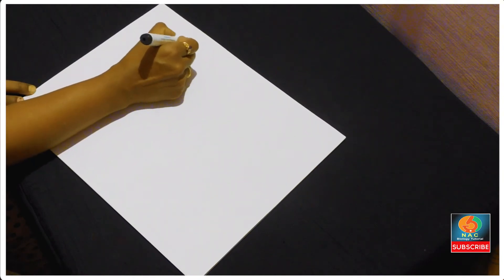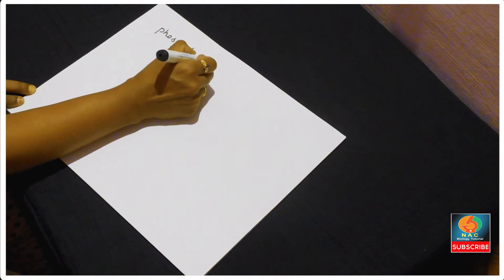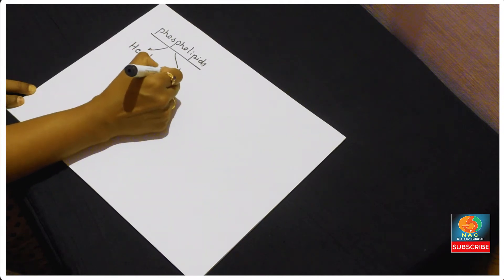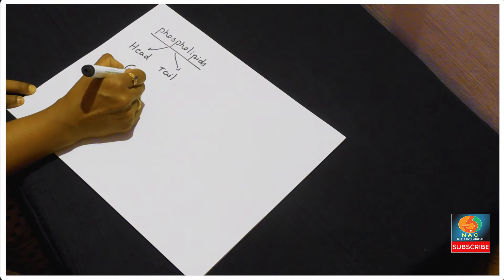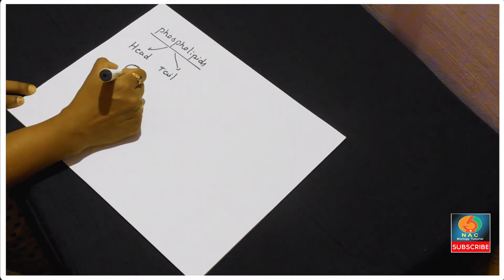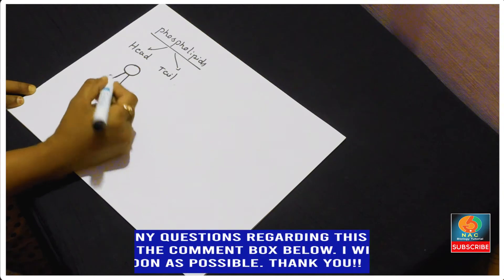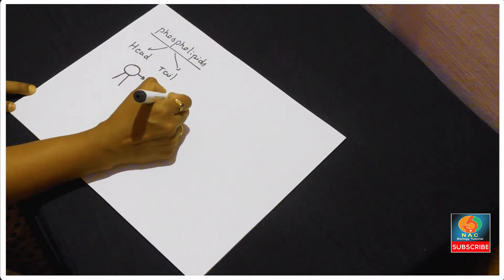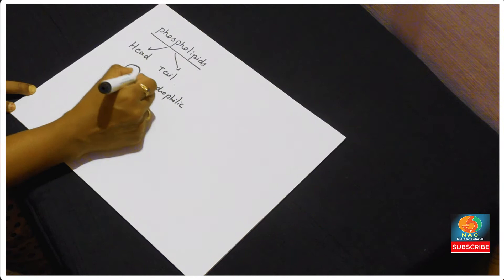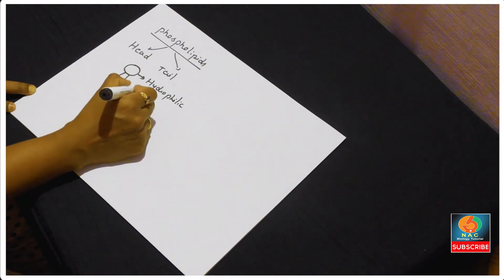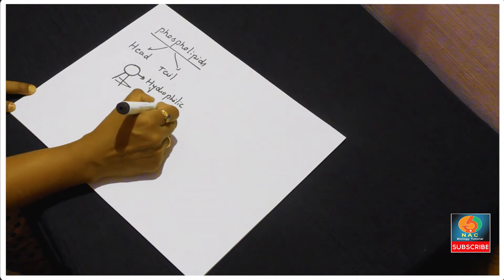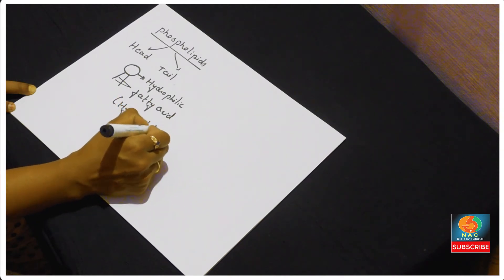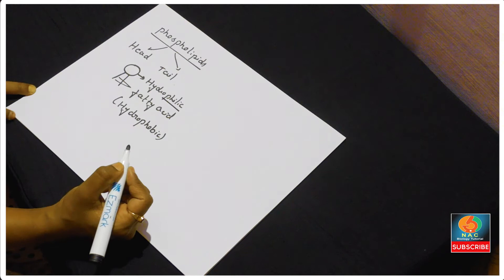Phospholipids consist of two parts — one is the head region and the other is the tail region. The head portion of the phospholipid consists of two tails, which are two fatty acids. The head region is hydrophilic in nature — this is the hydrophilic phosphate head. The two fatty acid tails are hydrophobic in nature. Hydrophobic means water-hating, and hydrophilic means water-loving.